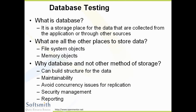What are all the other places to store data? We also have file system objects and memory objects — these are all other places available for storage. For example, you are writing a Word document and you are storing it in a hard disk — that is called a file system object. When you load a Word document, it gets loaded into the memory, and in memory it stores that information as an object. So in such situations, it is also a storage place.